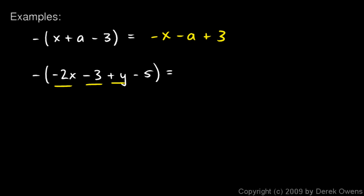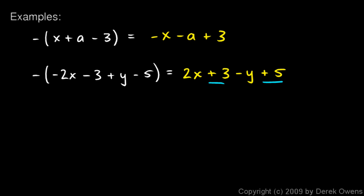Down here we have four terms in the parentheses. This negative sign will change the sign of each of them. So the negative 2x becomes a positive 2x. The negative 3 becomes a positive 3. The y becomes a negative y, and the negative 5 becomes a positive 5. And then we can combine the 3 and the 5 into an 8, so this is going to equal 2x minus y plus 8.